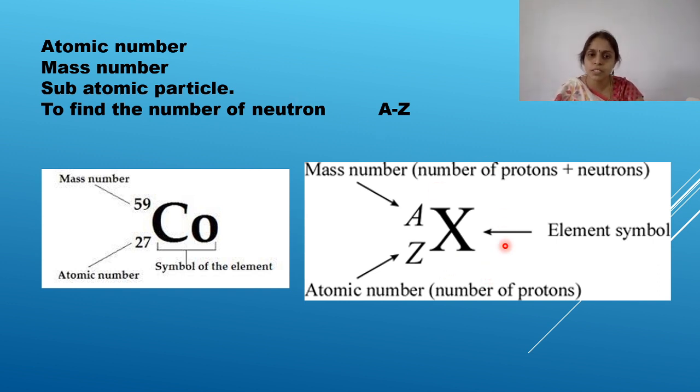So these are subatomic particles also. So where to write this mass number? It's always a superscript. Where to write the atomic number? It's always a subscript. And it is denoted by, mass number is denoted by A, atomic number is denoted by Z. So what is this capital X? It can be any element. It's a symbol. Here is an example for you. Cobalt is a symbol of an element. Mass number is 59 and atomic number is 27.